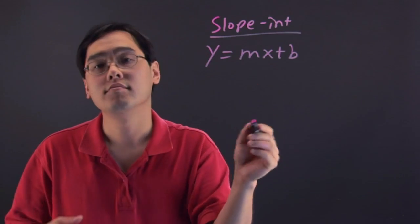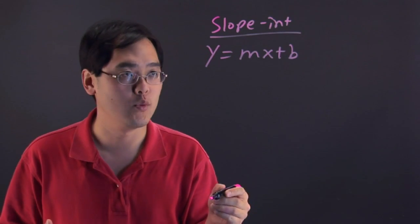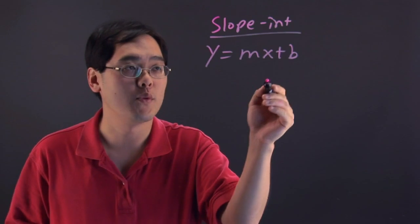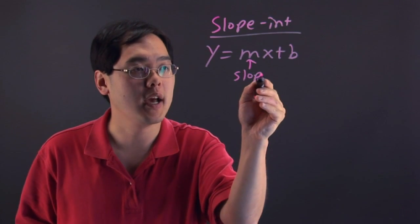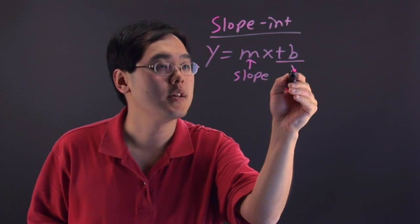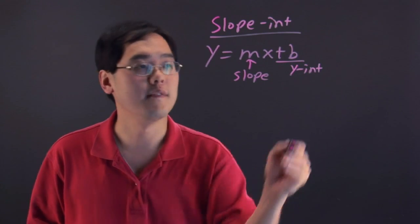x and y are, of course, your x and y coordinates that you can plug in whatever you like, but here's the beauty of the rest. The m, you might already know, is the slope of the line and the b is the y-intercept of the line.